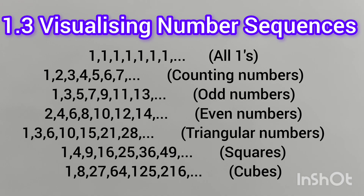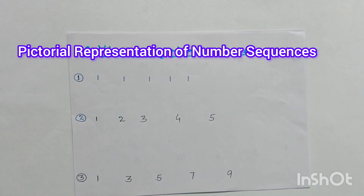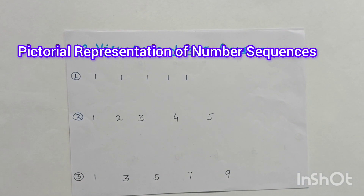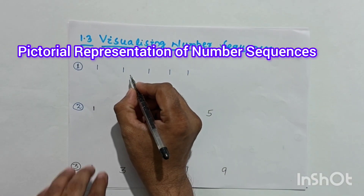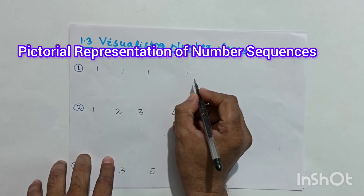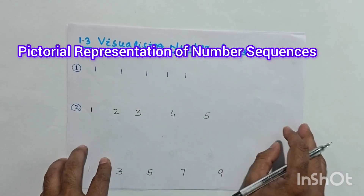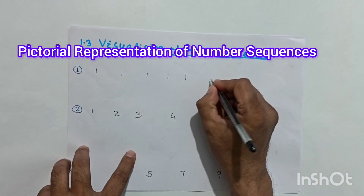Today we are going to discuss the first seven number sequences from Table 1, using picture diagrams for better understanding. Sequence number one is the all-ones sequence: 1, 1, 1, 1, 1, and so on.